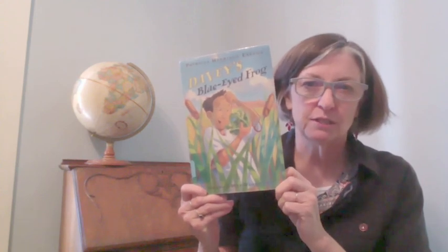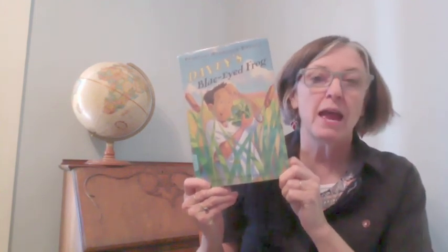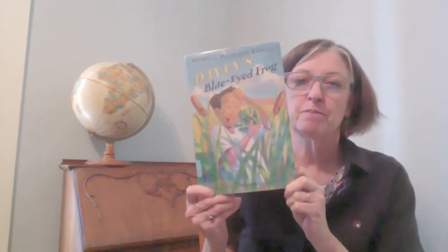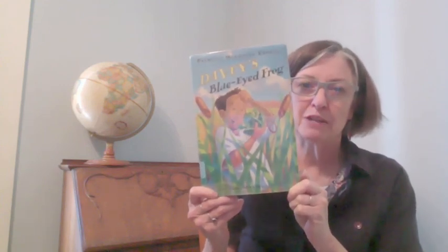And that is all that I can read today from Davy's Blue-Eyed Frog. I'm going to return this to the library, so you can check it out if somebody doesn't beat you to it. And read and find out what happens to Davy and his blue-eyed magical frog. Thank you for coming again to Story Starters for Younger Children, and I look forward to seeing you next time. Bye.